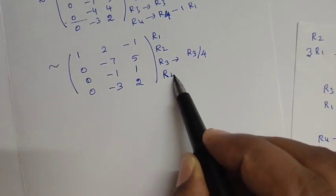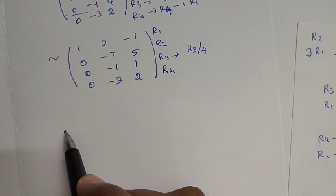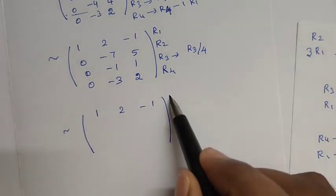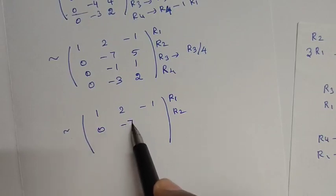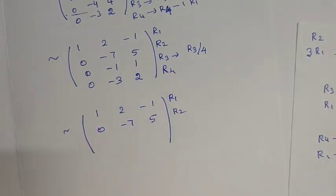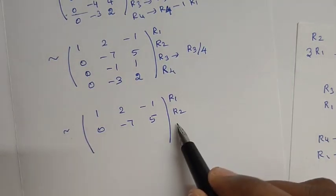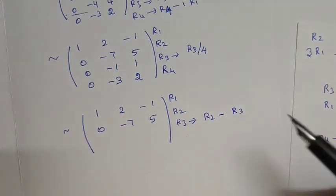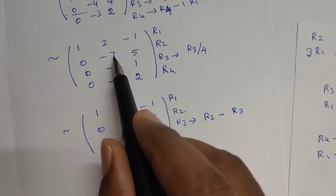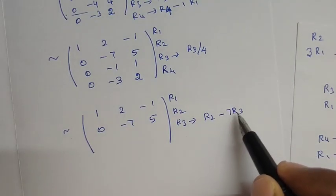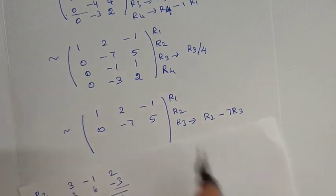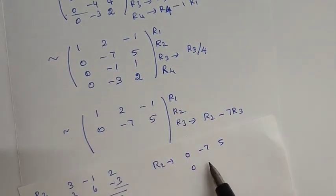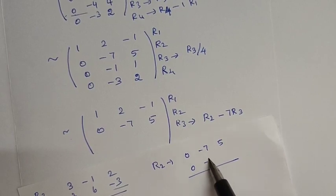Now I will apply further row changes. For R2 minus 7 times R3: R2 is 0, minus 7, 5. R3 is 0, minus 7, 5. After the operation, R3 becomes the pivot row.